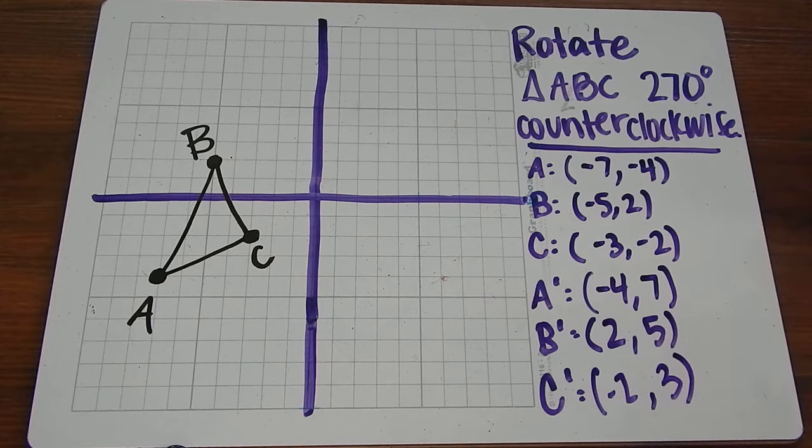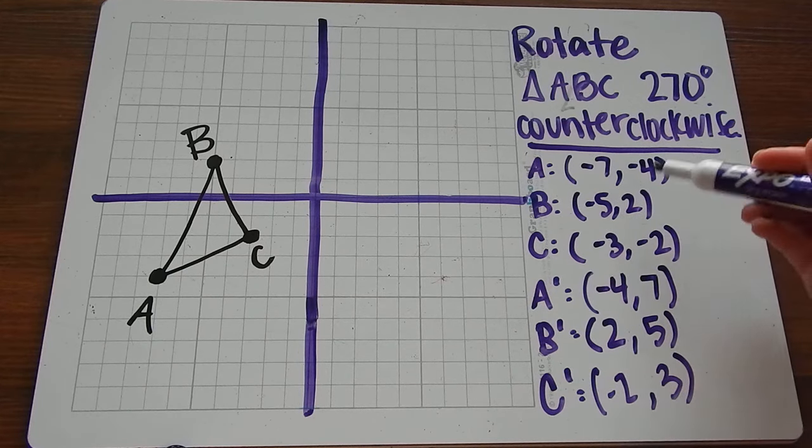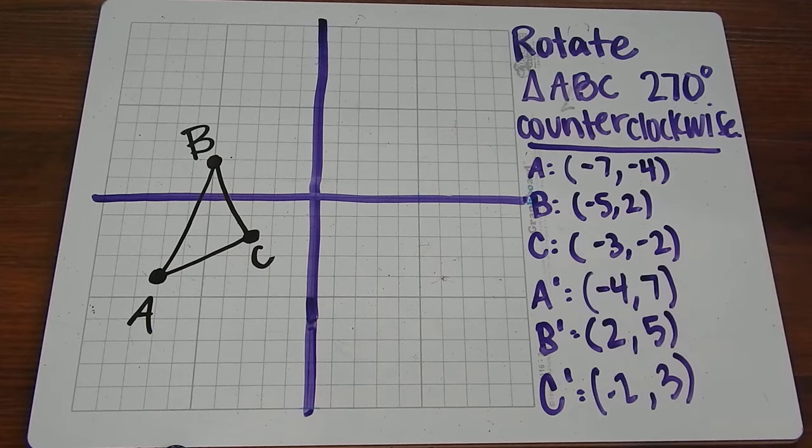Negative x would be positive 3. So we change the signs of the x values. They go in y, all the y's stay the same, but they now go in x. And now we can plot these points and draw our new triangle.